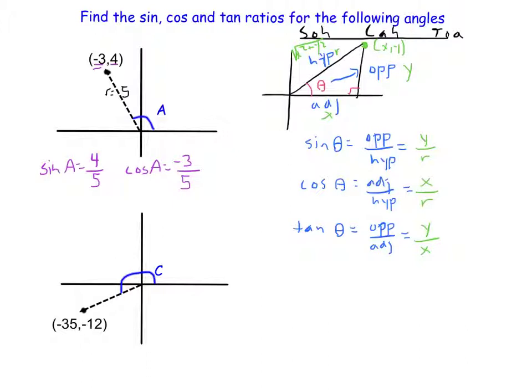And on to tangent. TOA, opposite. Opposite, remember, is the Y, so this is going to be 4 over negative 3, and please clean that up, so this is going to be tangent of negative 4/3. Negative sign rises to the top on those.